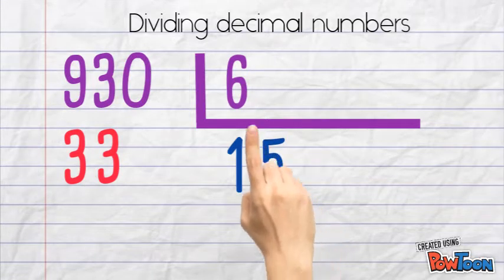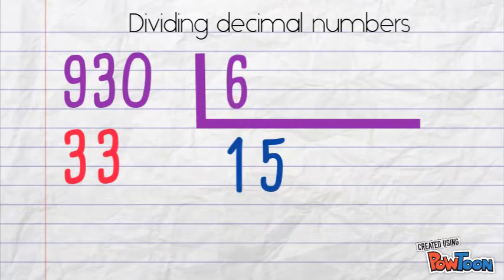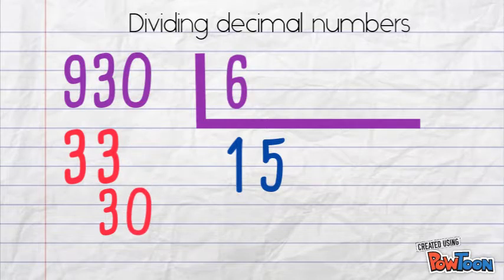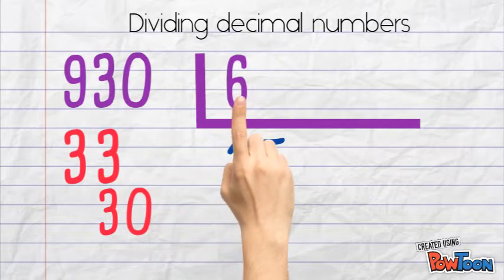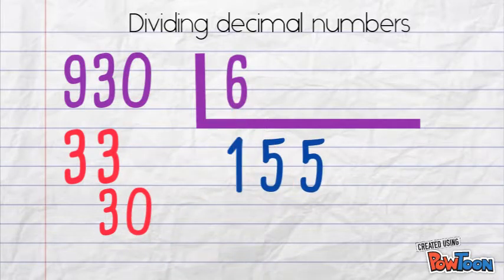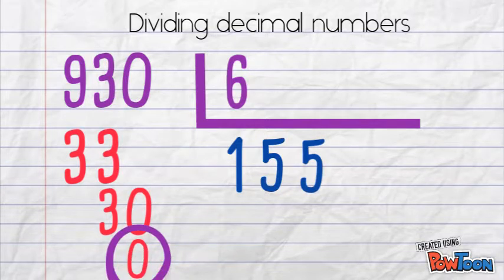5 times 6 equals 30, till 33 is 3. We can bring down the 0. 30 divided by 6 is 5, which gives us a remainder of 0. Now that the remainder is 0, our division is finished, with a quotient of 155.